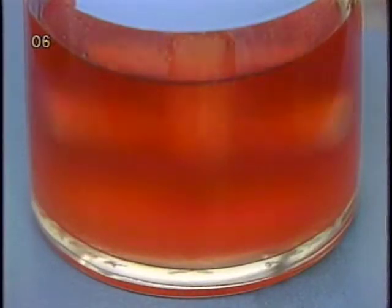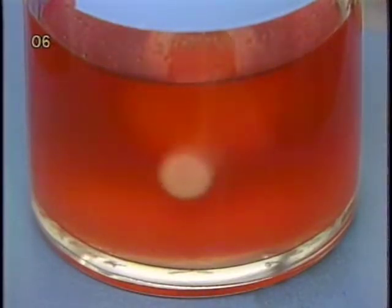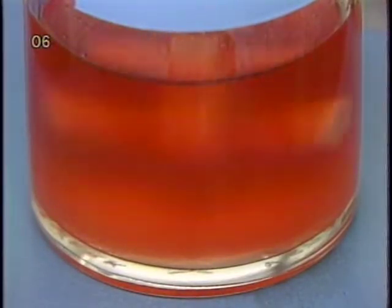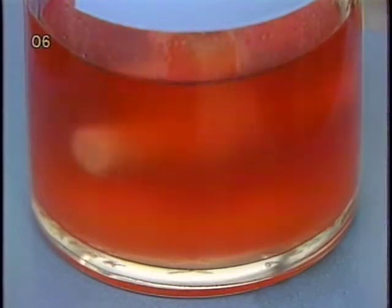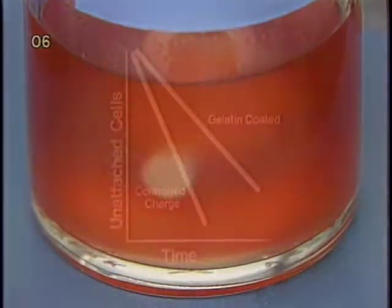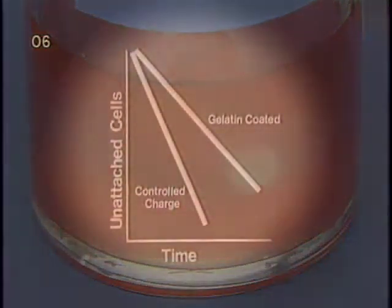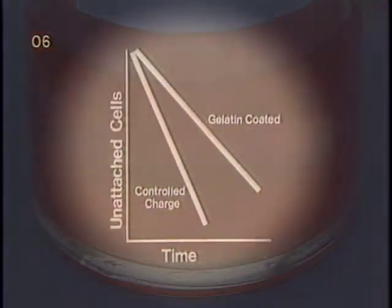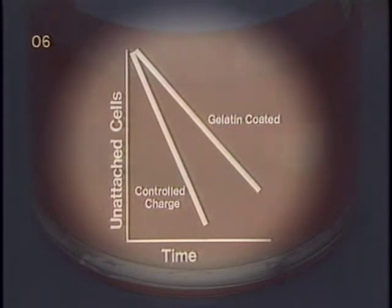The kinetics of cell attachment can be followed by the disappearance of unattached cells in the supernatant. In general, cells attach to controlled charged microcarriers at a faster rate than to gelatin-coated ones.